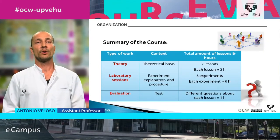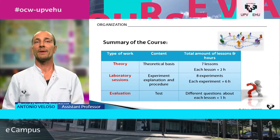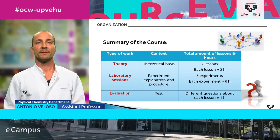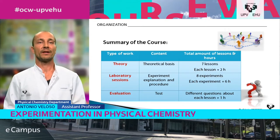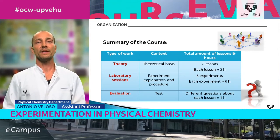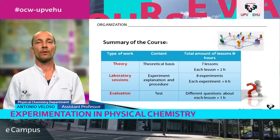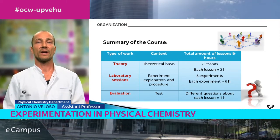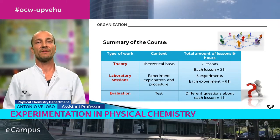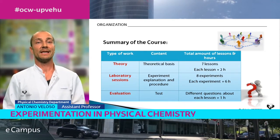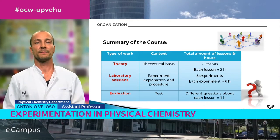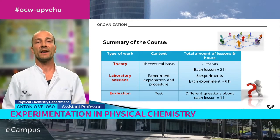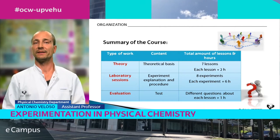The organization of this course is summarized in this table. We have three different types of work: theory, laboratory sessions, and evaluations. In the theory, we are going to work on theoretical basics, and we have seven different lessons. In laboratory sessions, we have eight experiments. And finally, we have an evaluation, which is going to be a test.